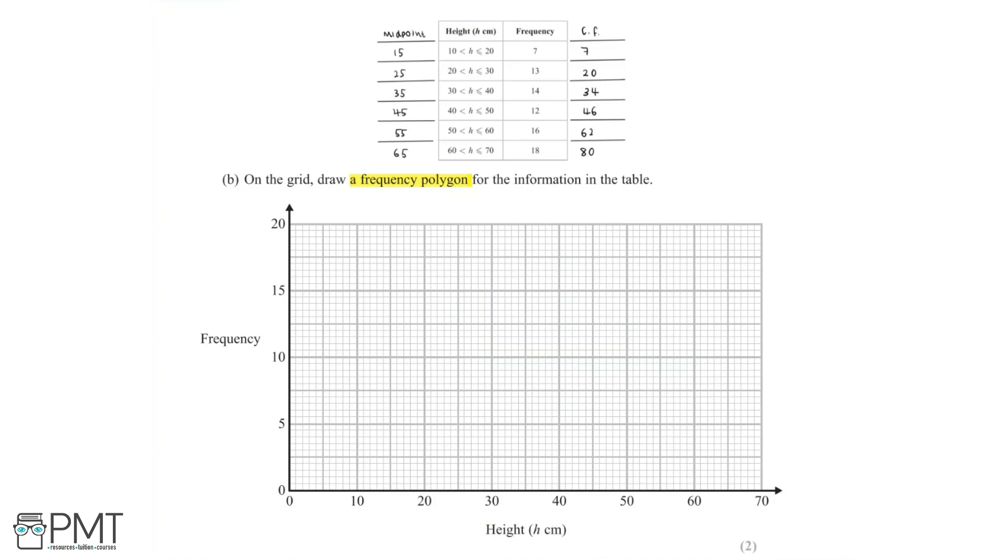Now we have a copy of our table above, and let's start by plotting the first points. We're plotting frequency against heights. Since we need to stick with the midpoint when drawing our frequency polygon, we have a height of 15 and a frequency of 7. So let's start by plotting our first coordinates, 15, 7.